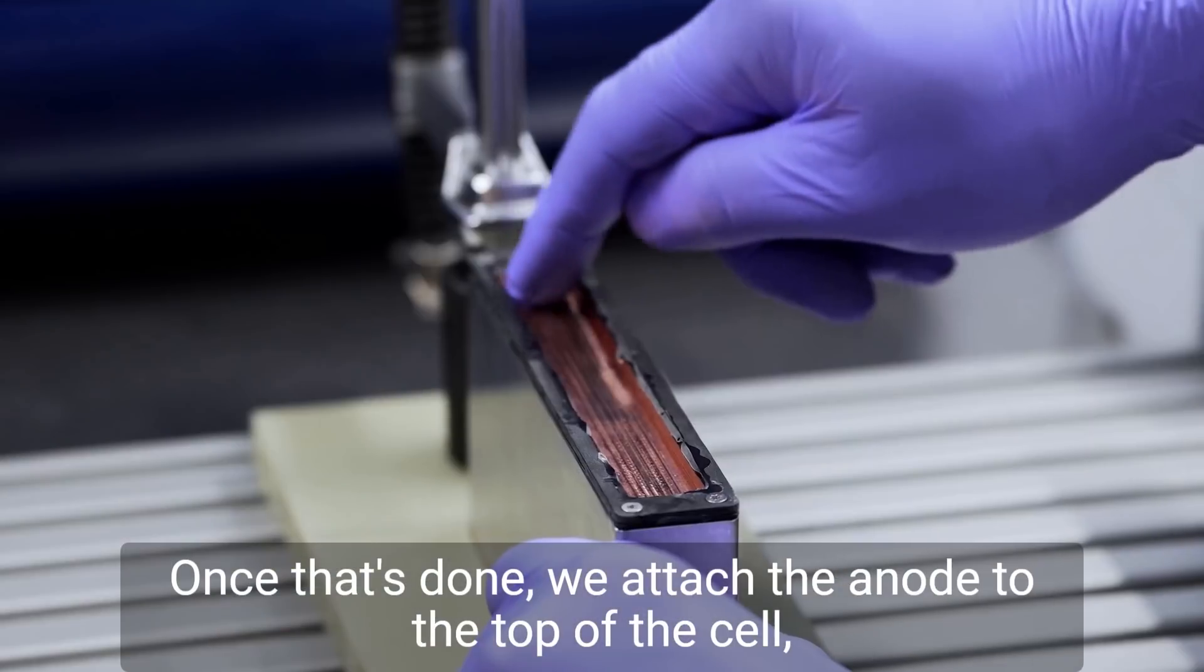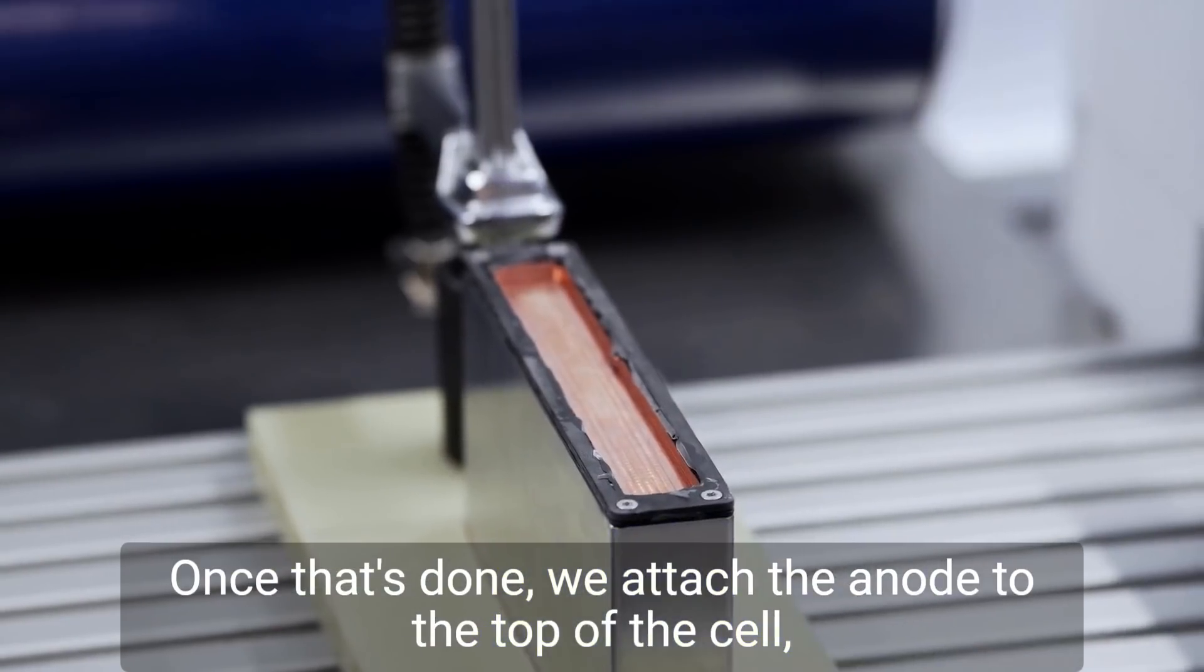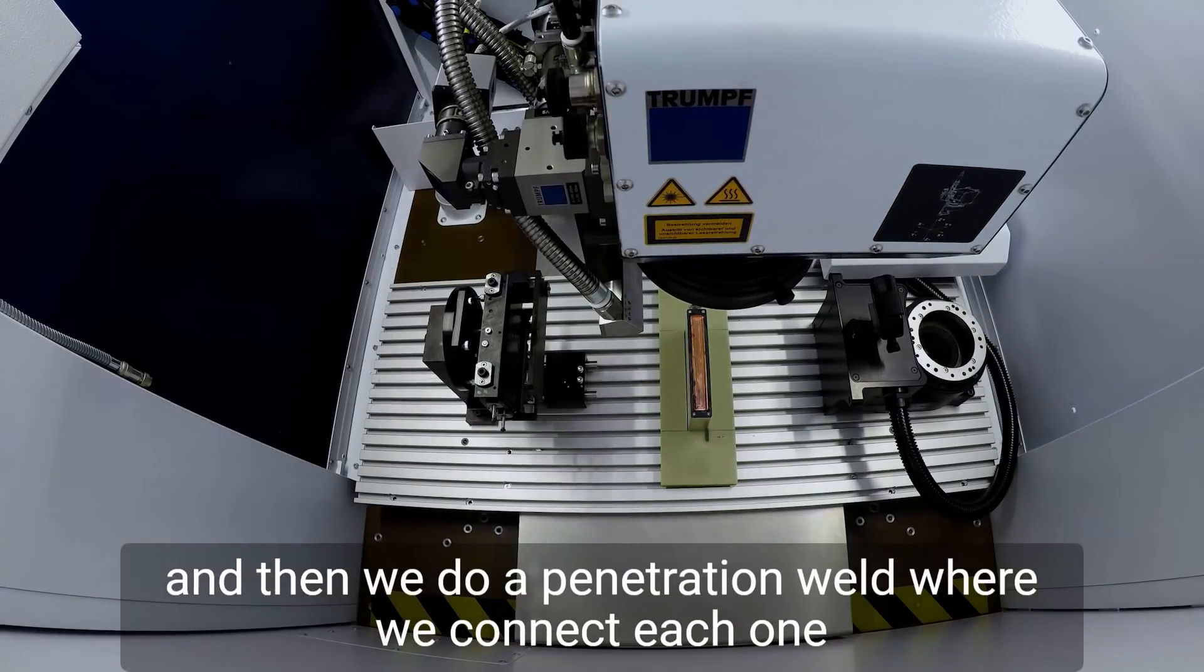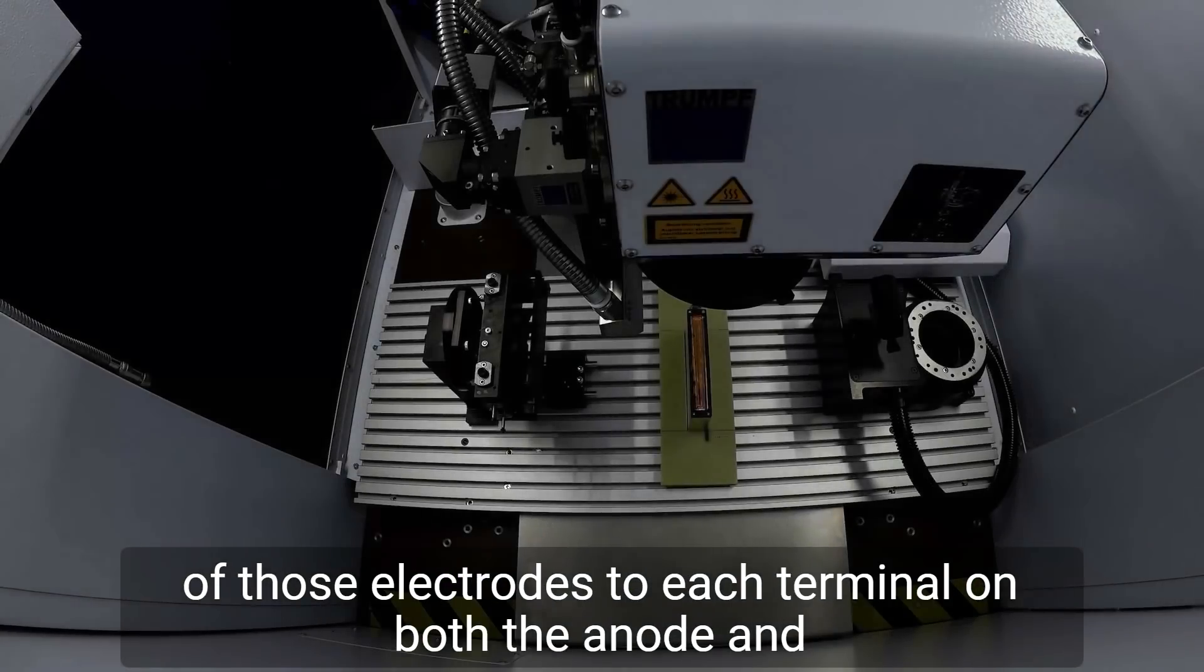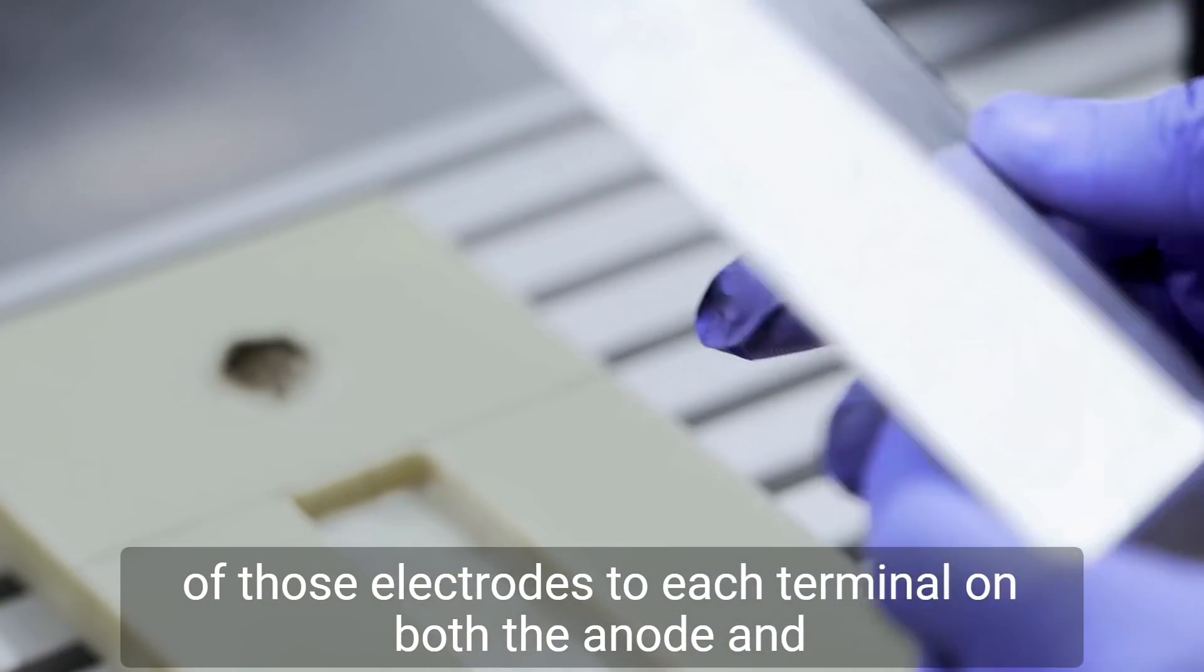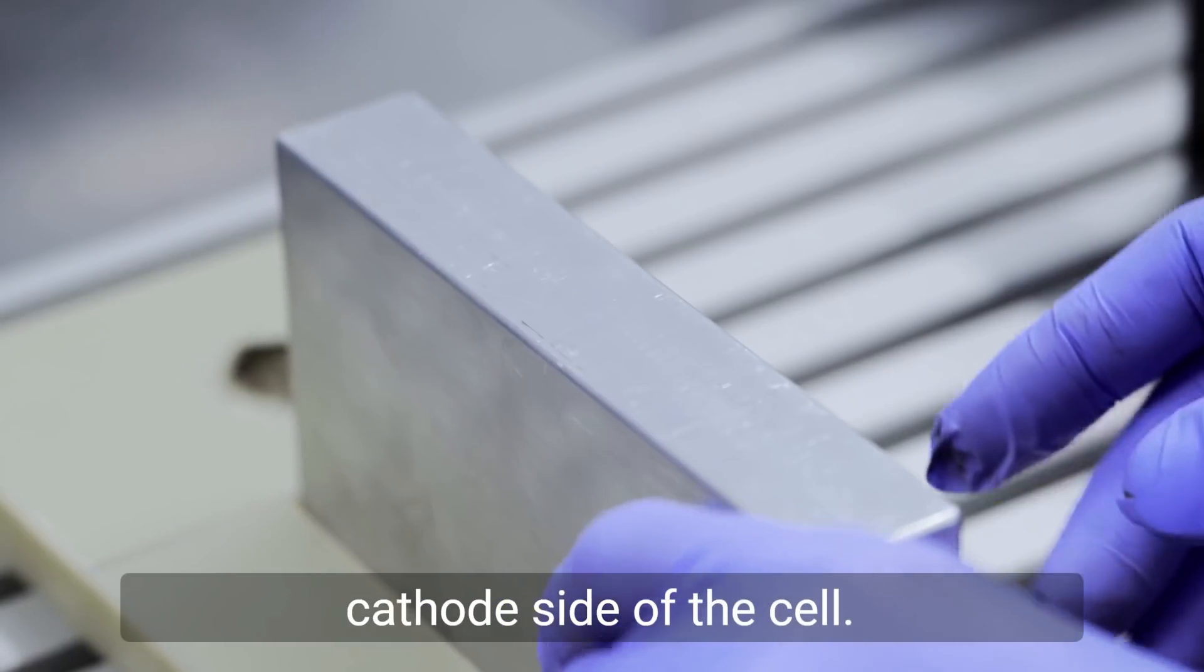Once that's done, we attach the anode to the top of the cell, and then we do a penetration weld where we connect each one of those electrodes to each terminal on both the anode and cathode side of the cell.